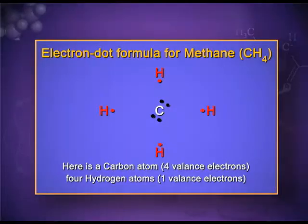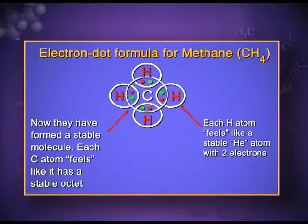Let me take the example of methane to show the electron dot structure. Carbon has four electrons in the valence shell and hydrogen has one electron each; they form a covalent bond by sharing electrons. The red dots represent the single electron of each hydrogen and the black dots represent the four electrons of carbon. By sharing, the duplet of hydrogen is complete and the octet of carbon is complete — both are in a stable state. Electrons are represented by the red and green dots.